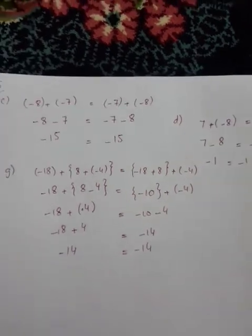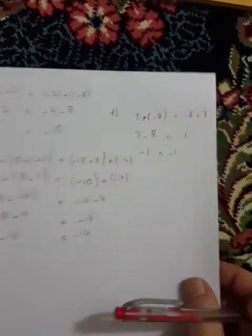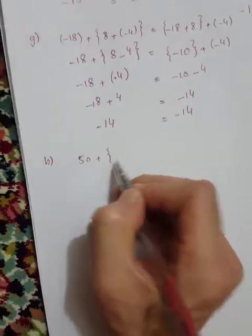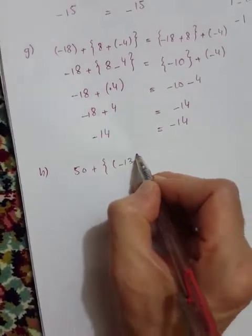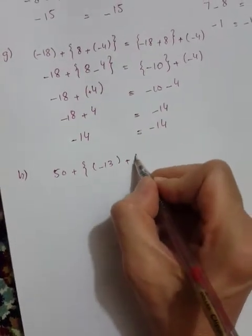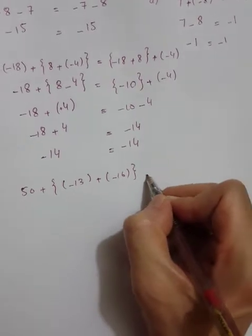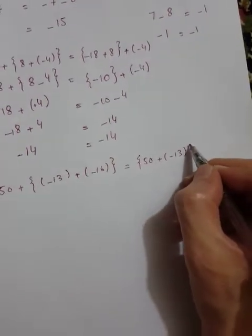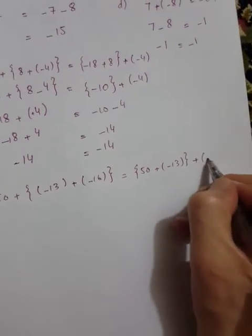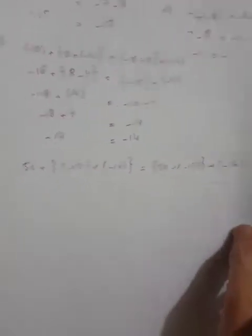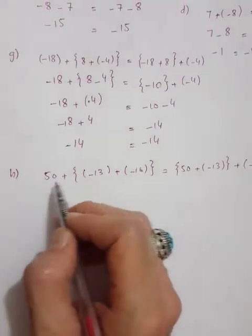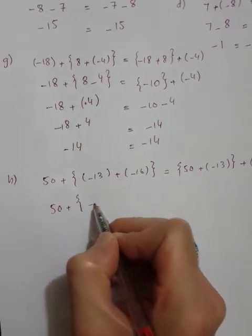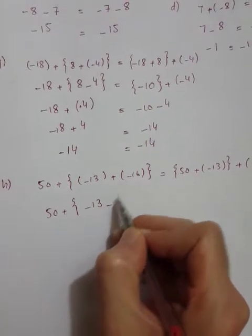Now part h: fifty plus curly bracket, small bracket minus sixteen, bracket close, fifty plus minus thirteen curly bracket close plus minus sixteen. Left-hand side solve: fifty plus simplify minus thirteen and minus sixteen, plus multiply minus minus sixteen.